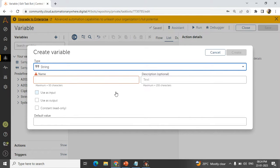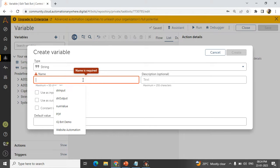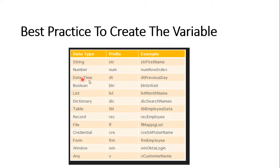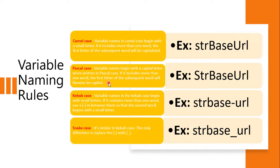Now I will take a string variable. Next, we have to give the variable a name using a naming convention. We have some standard rules. The variable name starts with the 'str' prefix. We have four variable naming rules. The most highly used in Automation Anywhere projects is camel case, but you can use any of them. This is one of the questions asked in interviews, so you should analyze what the different naming rules are. The first one is camel case.